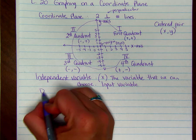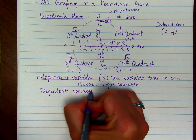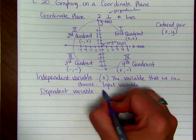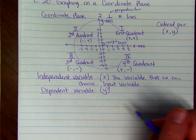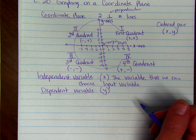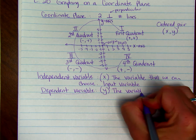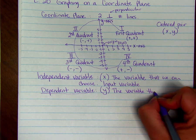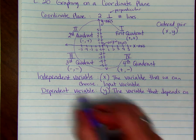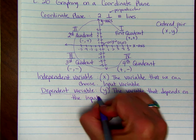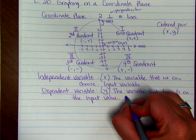Then we have the dependent variable. That is the y-value. And it's a variable whose value is determined by the input value, by whatever you choose. So the y is the variable that depends on the input value, and it's also called the output variable.